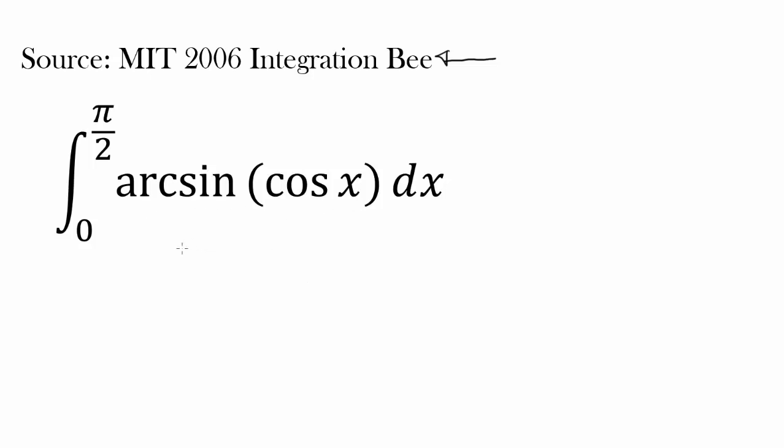For arcsin(cos x), let's start with finding the indefinite integral. Why don't we let the indefinite integral be x times arcsin(cos x)? Obviously that's not going to be the answer, but it's close enough.